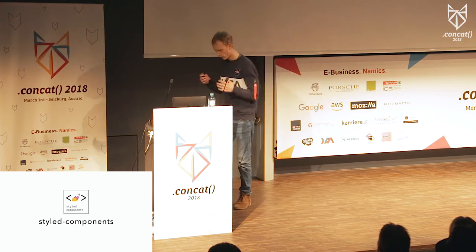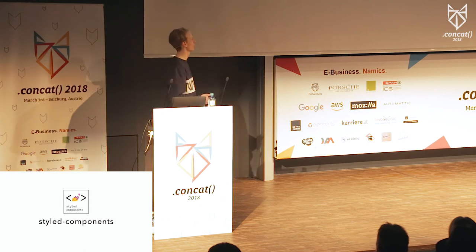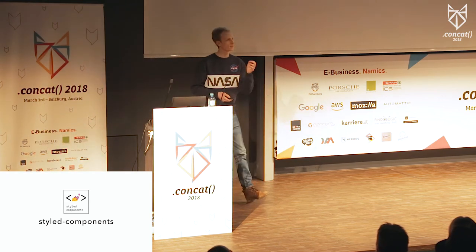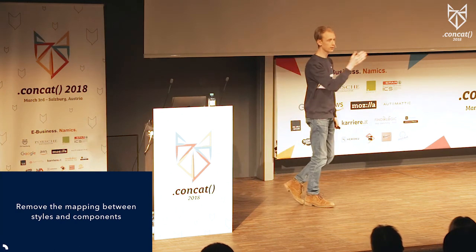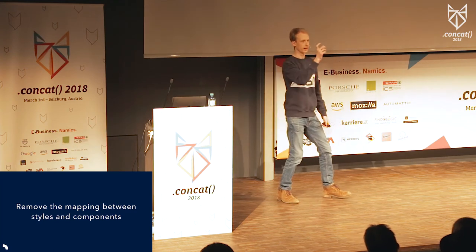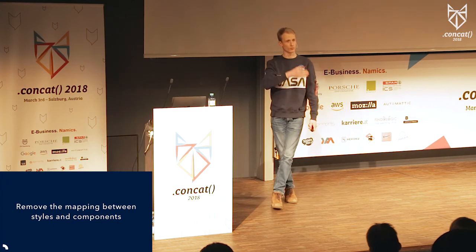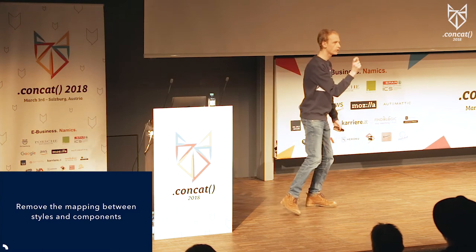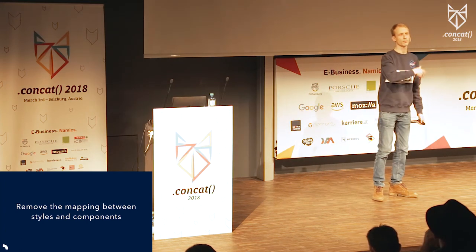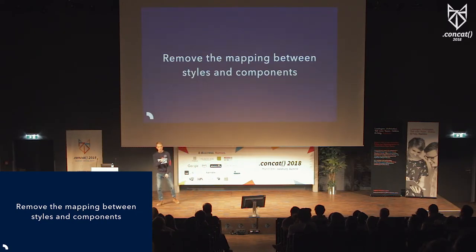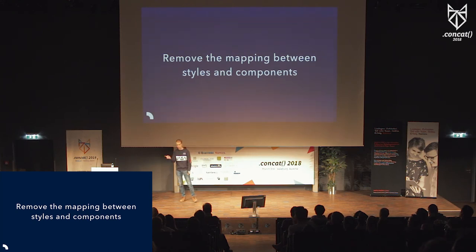This is the story of where styled-components comes from — that's what we eventually called this library that came from a week of bashing our heads together and messing with JavaScript. The important differentiator was the removal of the mapping between styles and components. A class name is a many-to-many mapping of styling to DOM nodes — any DOM node can have many class names, and any class name can be applied to many DOM nodes. But as a developer creating a component, you only ever use a class name in that one component and then reuse the component. If that mapping is effectively one-to-one for the developer, why have the mapping at all? You can just bind them together.